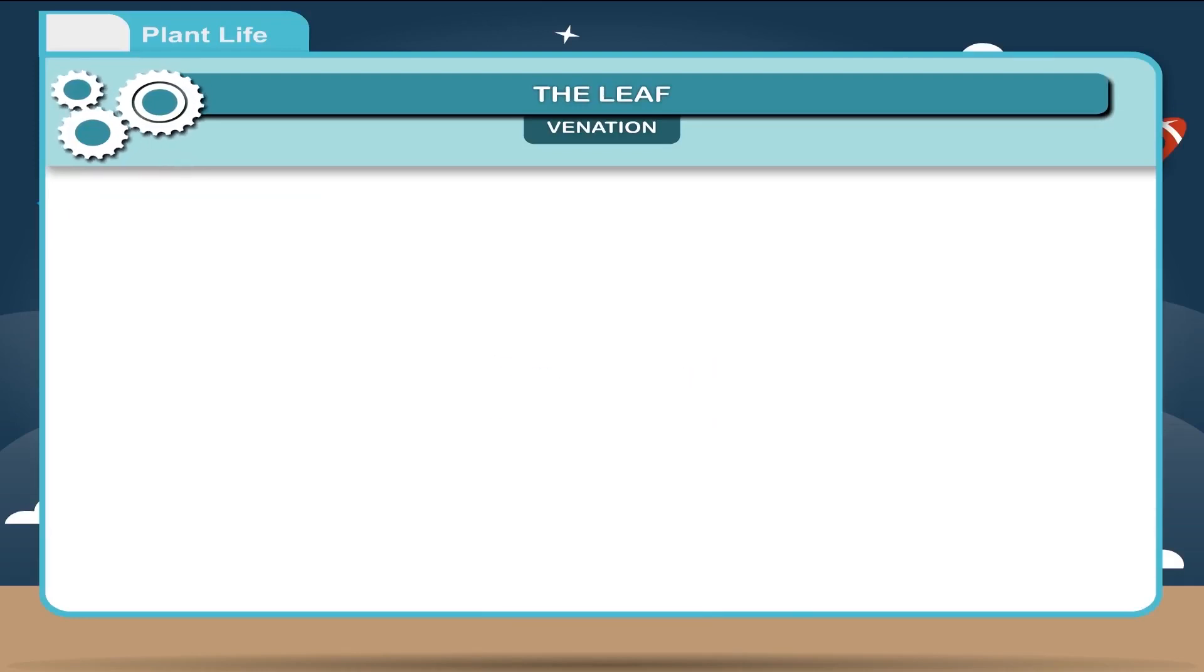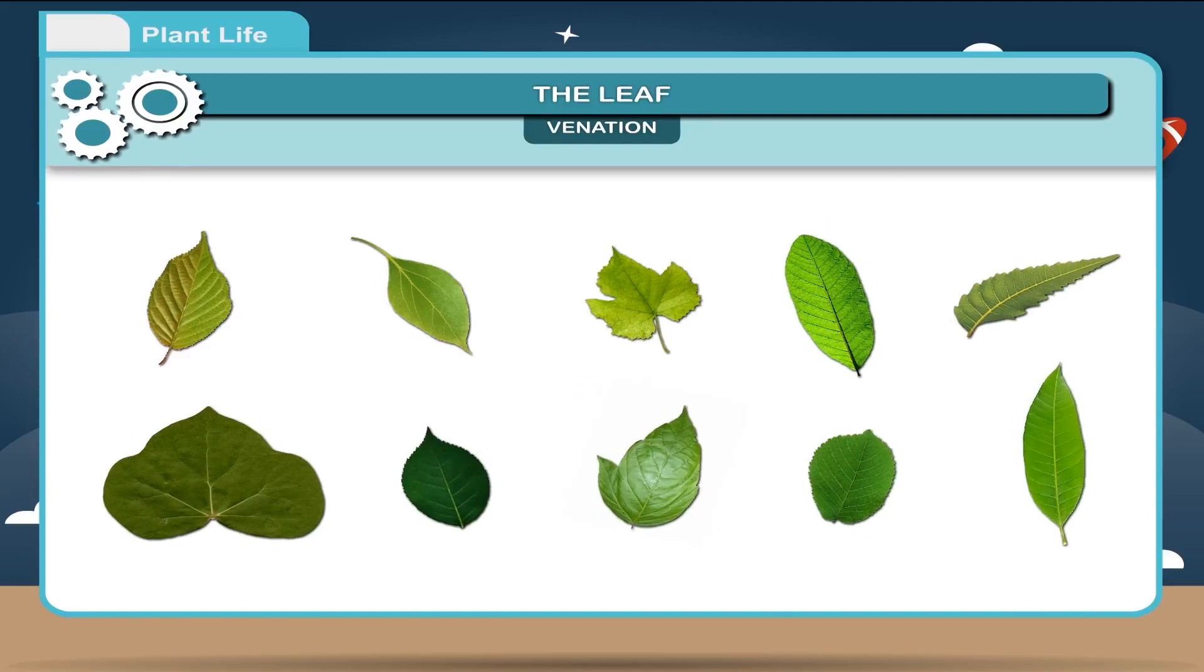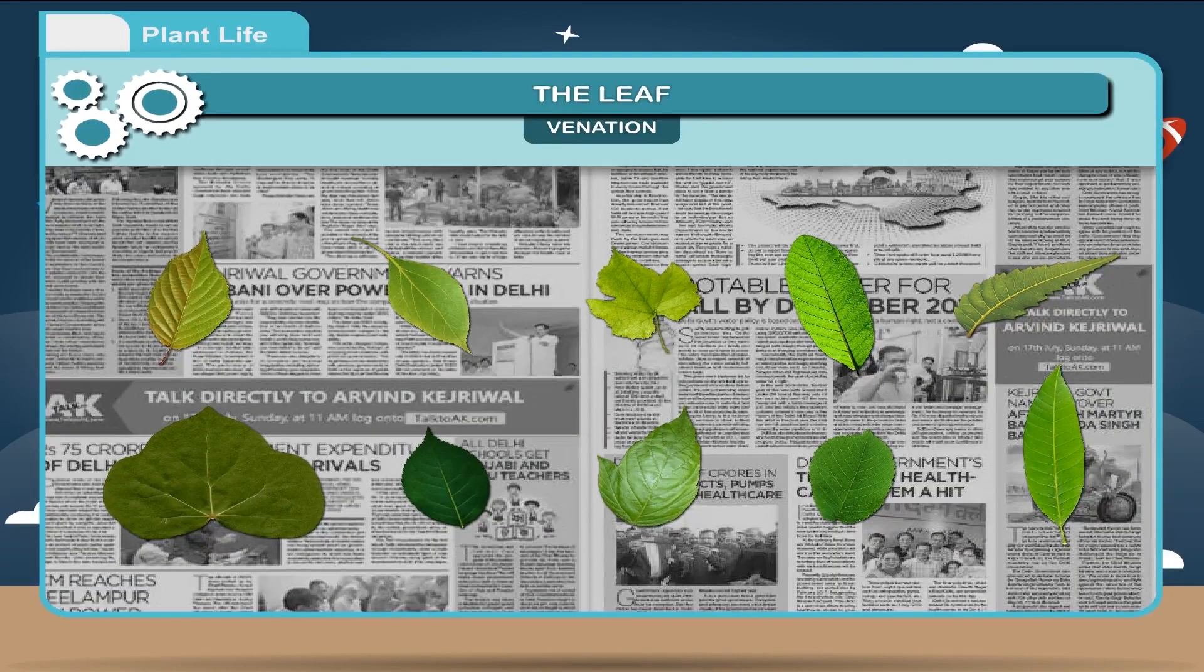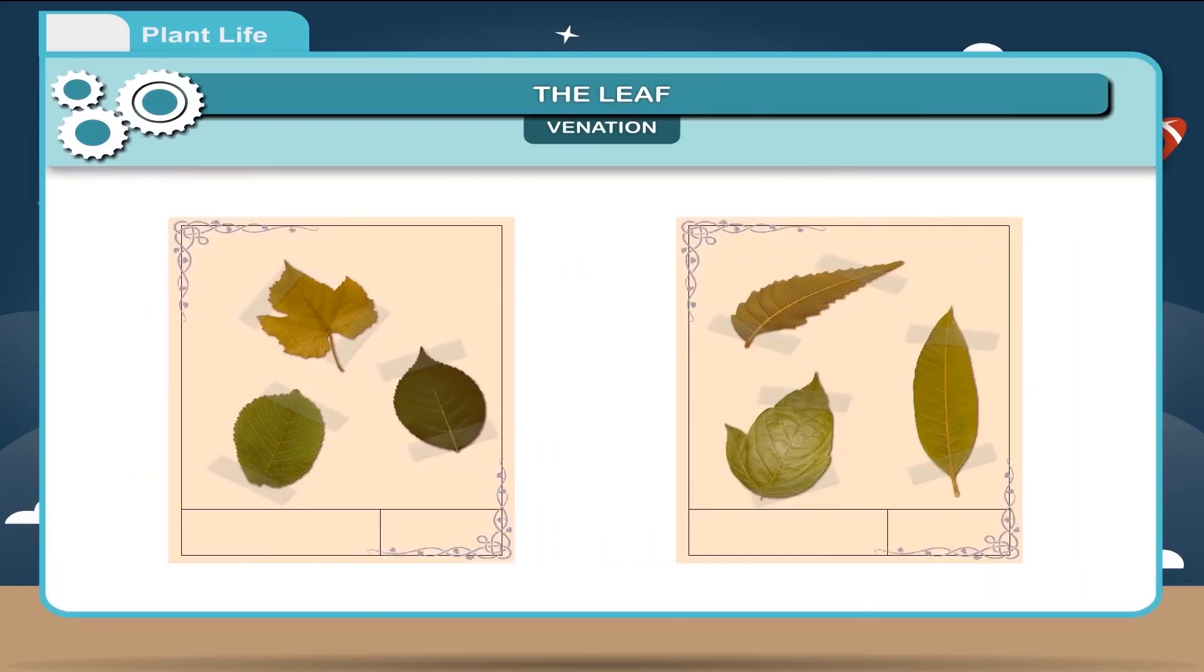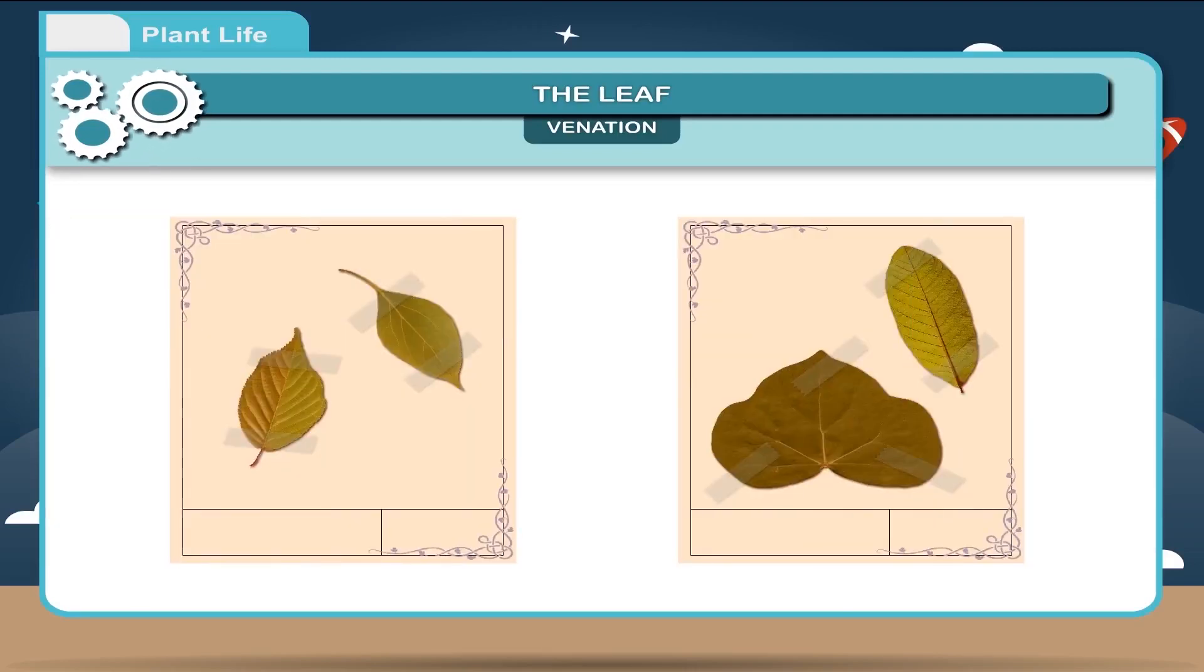Activity: Collect 10 different types of leaves. Dry them by pressing between newspapers. Paste them on herbarium sheet. Observe their venation, shape, and margin of the leaf.